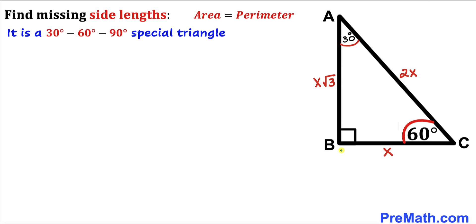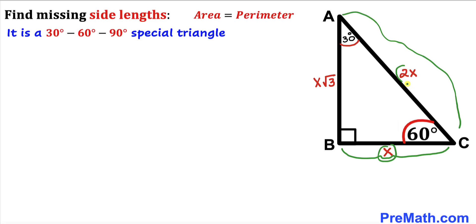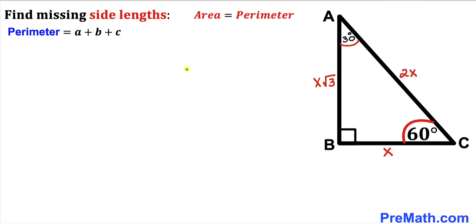So the side lengths of this right triangle are: BC equals x, the hypotenuse AC equals 2x, and side AB equals x times square root of 3.